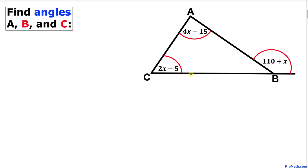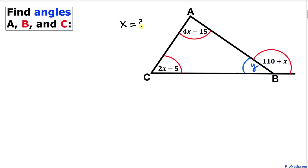Welcome to pre-math. In this video tutorial we have triangle ABC with given angles as you can see in the figure, and we are going to calculate angles A, B, and C. Our angles are in terms of x. Angle A is 4x plus 15, angle C is 2x minus 5, and angle B is missing — let's call it y. To find these angles we must find the values of x and y.